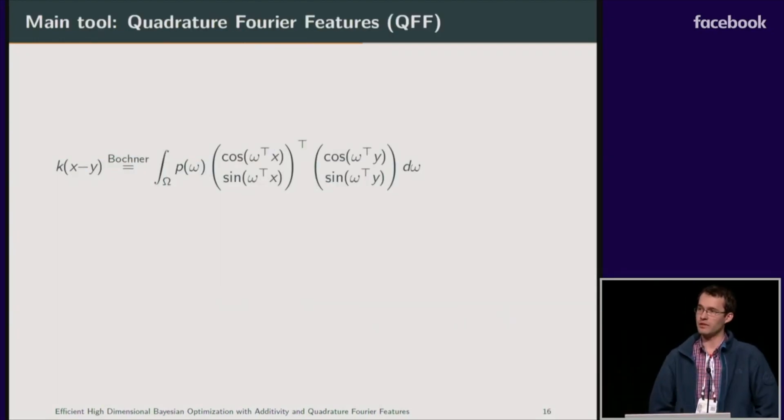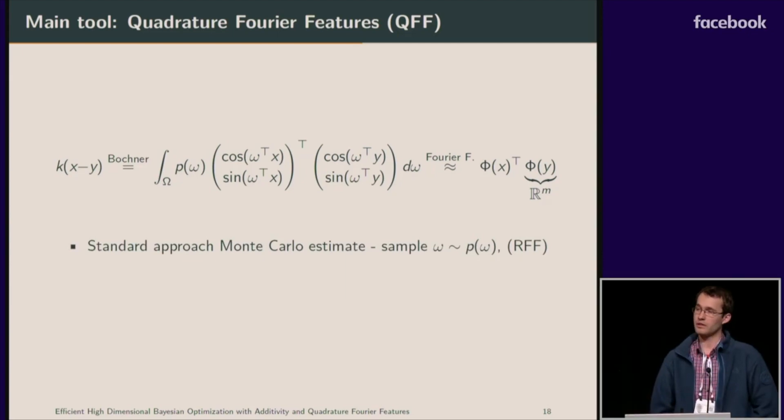To achieve these significant improvements, we make use of integral representation of kernels. We know that every stationary kernel can be represented as a Fourier transform. And this integral can be further approximated using a sum which leads to an inner product in a high-dimensional space, also known in literature as Fourier features approximation. A standard way to construct this finite sum approximation is to sample inducing frequencies according to a Fourier transform of a kernel. This is the motivation behind the celebrated work of random Fourier features.